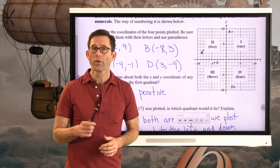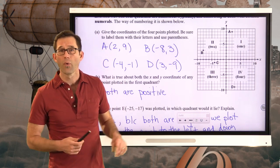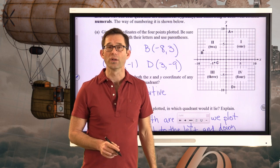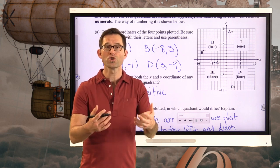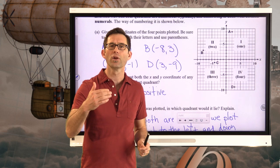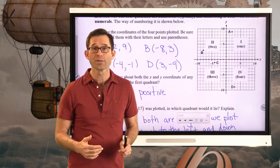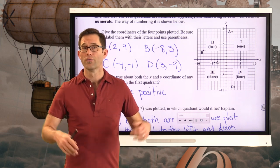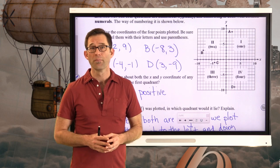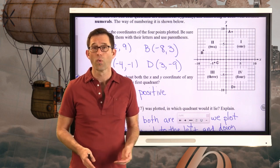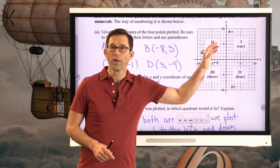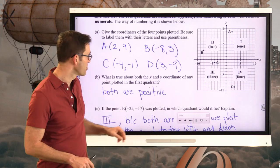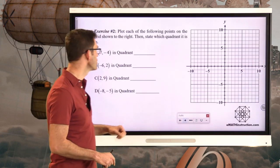If you're wondering what quadrant a point would be in if it lies on the axes, that's a great question — it means you're pushing your mathematical thinking. The answer is it wouldn't be in any quadrant. It's like standing on the border of the United States and Canada: you're not in either country because you're standing on the border. A point plotted on one of the axes is not actually in a quadrant.